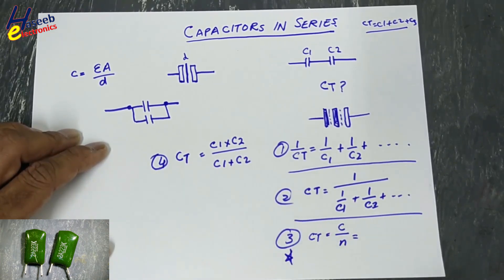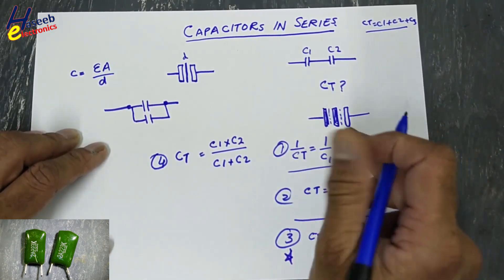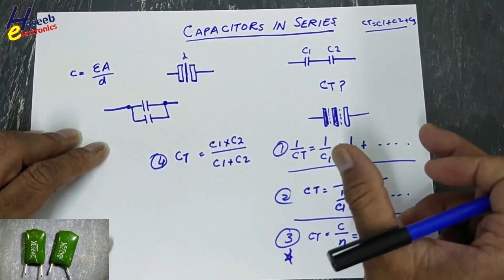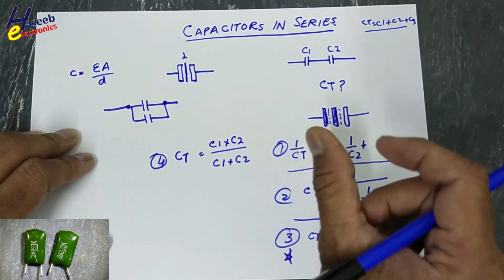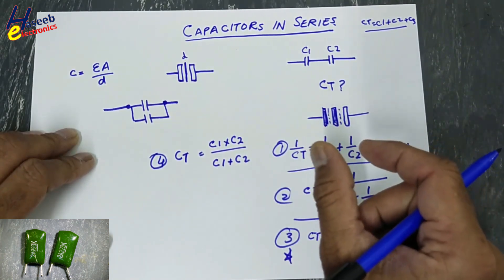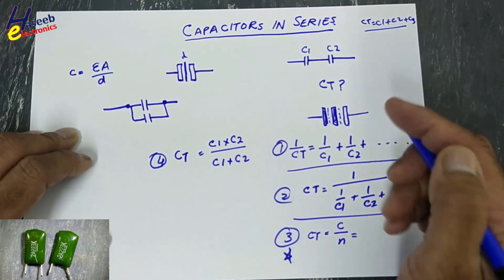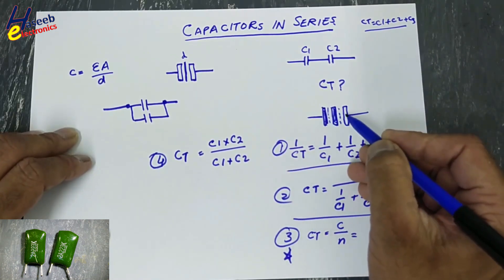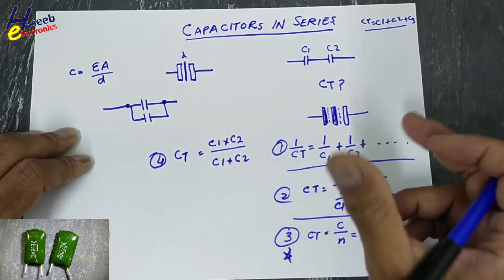The same-value shortcut is conditional — the capacitor values must be the same. When we connect capacitors in series, we are increasing the dielectric size, so the voltage value increases. If one capacitor is rated 100V and the second is also 100V, the total rated voltage will be 200V.